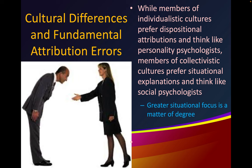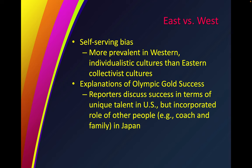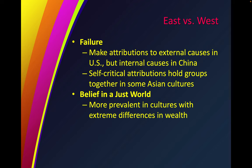Individualism says 'you must learn to think for yourself,' while collectivism says 'you must do what is best for the family.' Members of individualistic cultures prefer dispositional attributions and think like personality psychologists, while members of collectivistic cultures prefer situational explanations and think like social psychologists. Self-serving bias is more prevalent in Western individualistic cultures. In explaining Olympic gold success, U.S. reporters discuss success in terms of unique talent, while Japanese reporting incorporates the role of coaches and family. For failure, the U.S. makes external attributions, while China makes internal ones. Self-critical attributions help hold groups together in some Asian cultures, and belief in a just world is more prevalent in cultures with extreme differences in wealth.